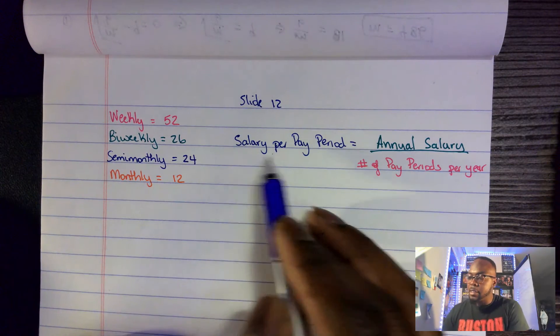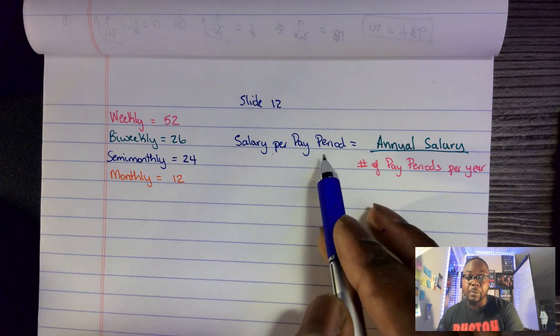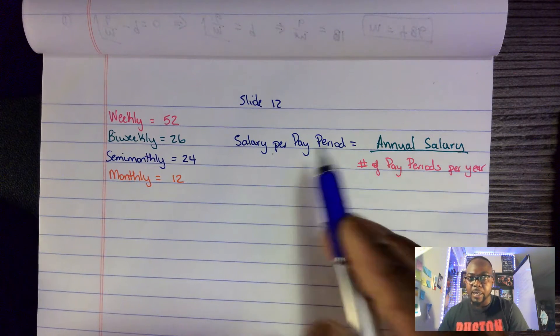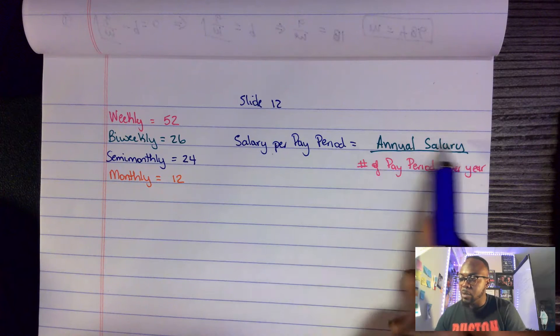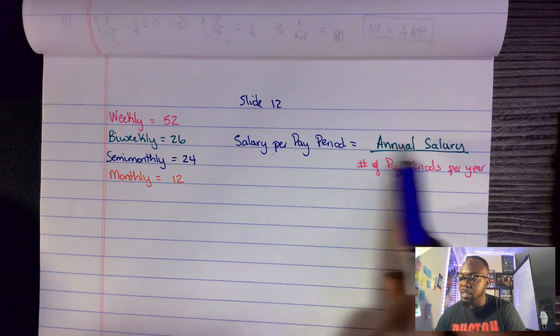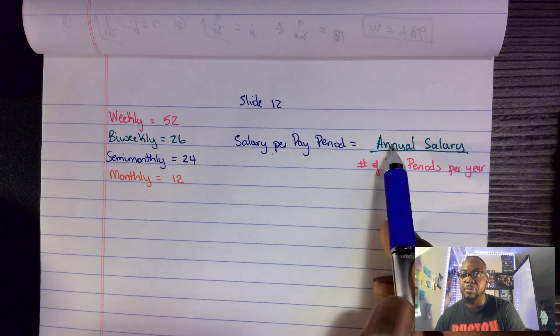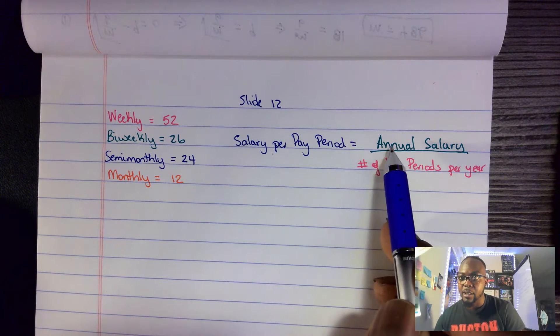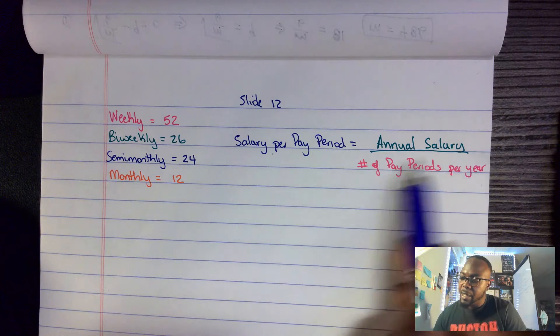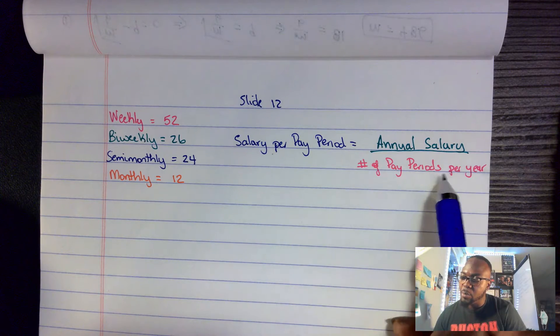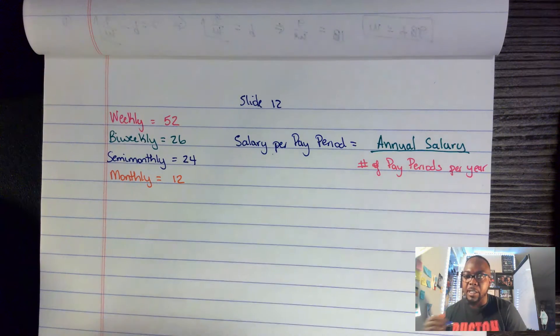How do I figure out the salary per pay period? Take your annual salary — the amount you get per year — and divide it by the number of pay periods per year. Let's look at a few examples.